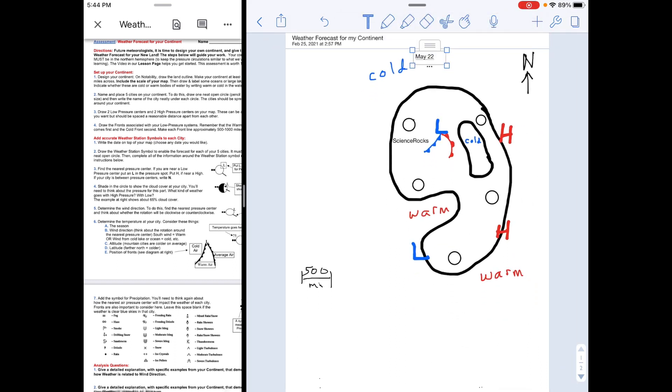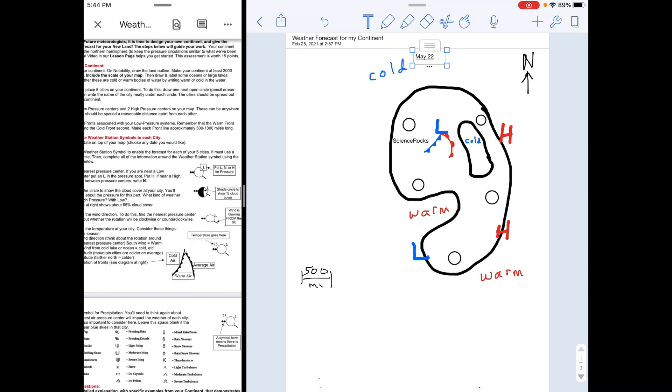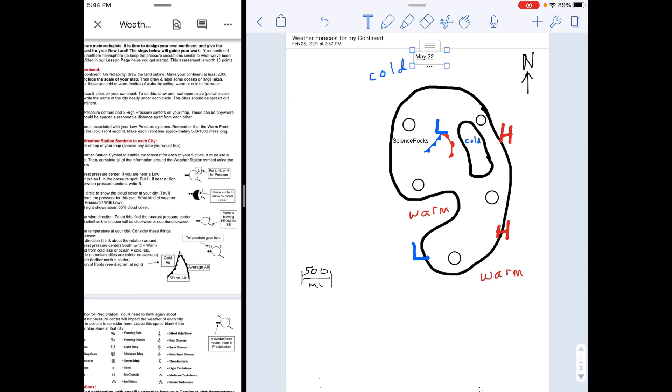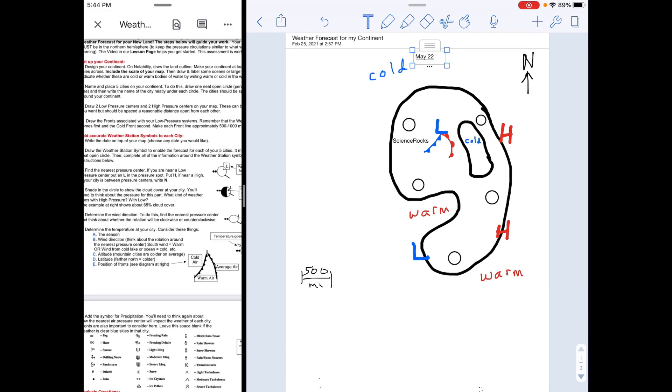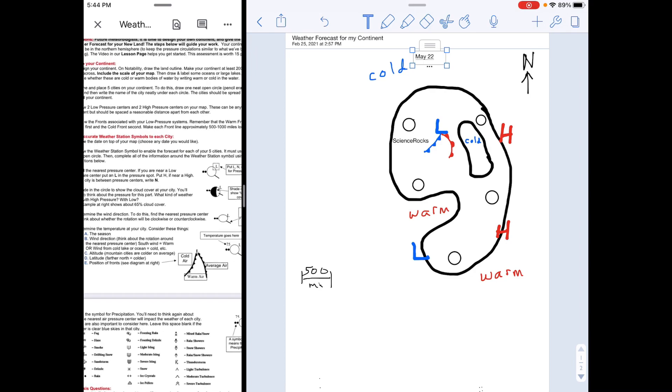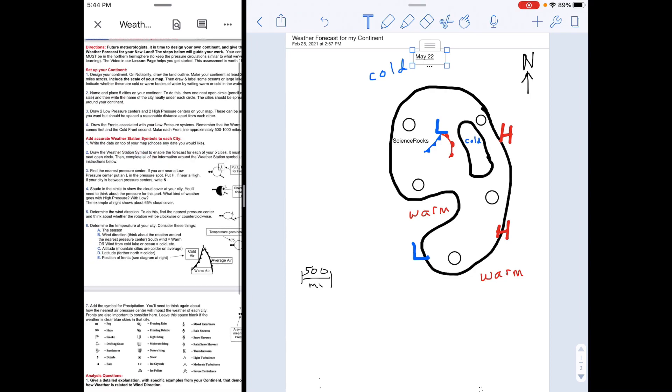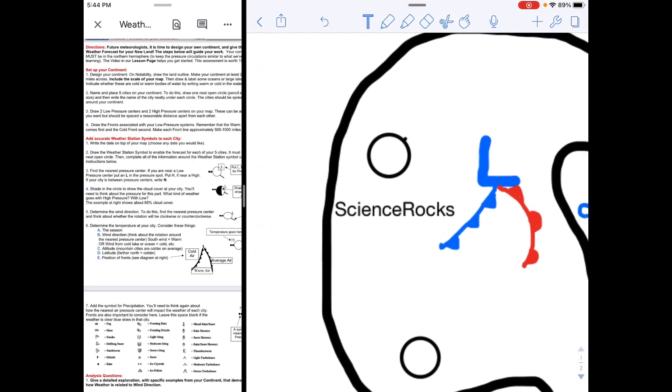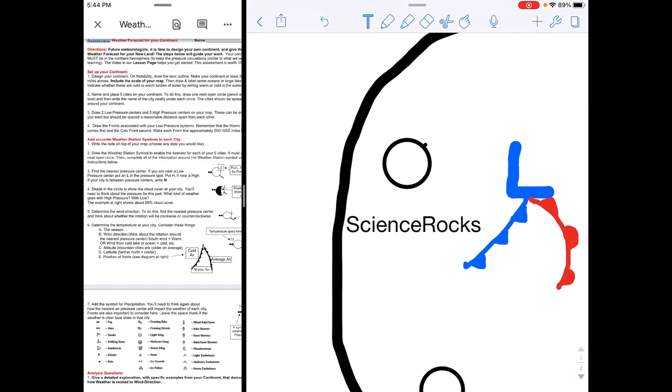Then step two on there is to draw the weather station symbol to enable the forecast for each of the five. I'll do one—it must use a neat open circle, then complete the information. I've already got the neat open circle for Science Rocks there.